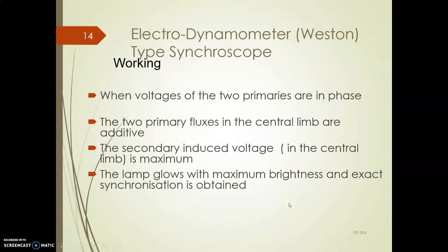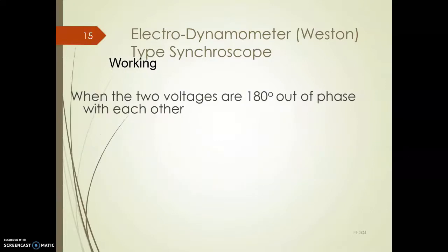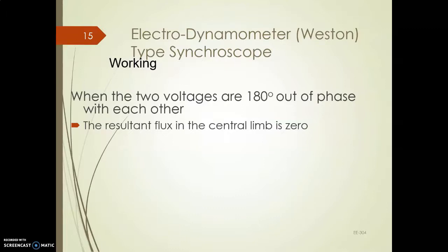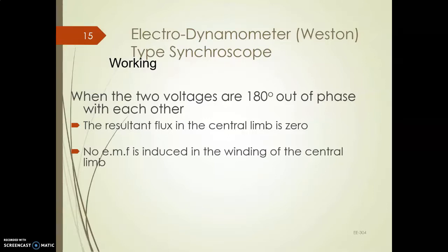When the two voltages are in phase, the fluxes are additive and the lamp glows. When the two voltages are 180 degrees out of phase, the fluxes are not additive — they subtract, giving φ1 − φ2. The flux in the central limb decreases to zero, so no EMF is induced in the secondary winding. Due to the opposing fluxes, the EMF becomes zero and the lamp remains dark.